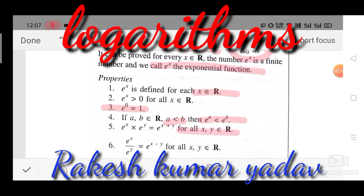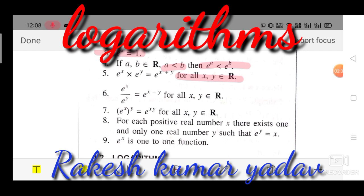Sixth property: e^x divided by e^y equals e^(x−y), since when bases are the same and in division their powers are subtracted, for all x and y belonging to real numbers. Seventh property: (e^x)^y equals e^(xy), meaning the powers are multiplied, for all x, y belonging to real numbers. These are very common and important properties of the exponential function.